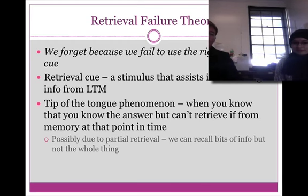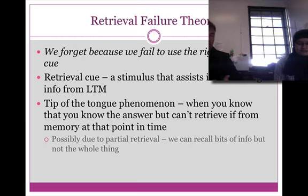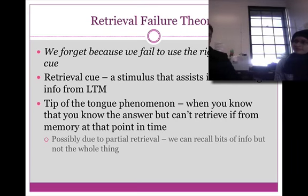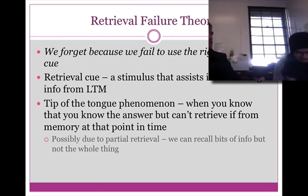An interesting thing about the tip of the tongue phenomenon is that it tells us that retrieval is not all or nothing. We can partially retrieve information depending on the cues that we have. So in the example with trying to remember my dog's name, you would know — if someone said, is it Sally? — you'd be like, no, it's not that. So you can tell sometimes what it's not because you have a partial retrieval. If someone says the dog's name is Rumpelstiltskin, you would say it doesn't have that many syllables.